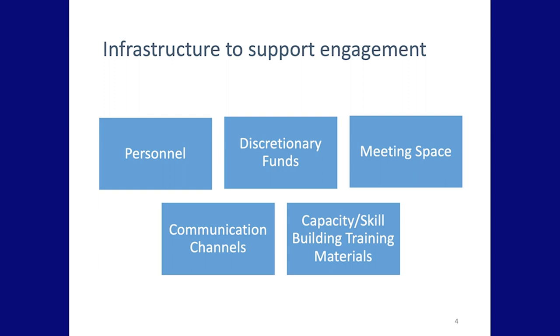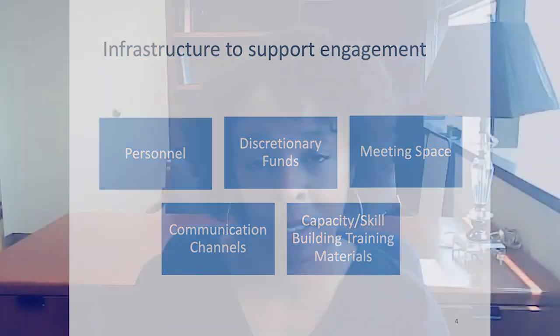Finally, there's often a need to build the capacity and skills of researchers and community stakeholders to be able to work alongside each other. Oftentimes there are challenges because researchers haven't been trained in ways to understand what skills are needed to work in partnership and have bi-directional, equal relationships with community stakeholders. Simultaneously, there's also a need to build infrastructure so that community stakeholders understand what research looks like and are prepared to work side by side with researchers.